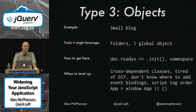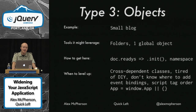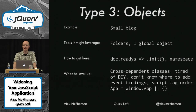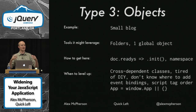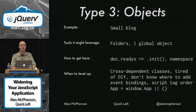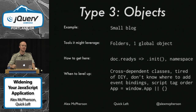How to get here: you turn all of your document readies into an init — one function that kicks off your whole app. You'll have some kind of a namespace containing your entire application, which makes it a lot easier to use third-party code, so you're less likely to have variable name conflicts. When to level up: when you have cross-dependent classes, files that talk about each other, when you're getting tired of DIY, if you don't know where to add your event bindings, or if you ever have a script tag inclusion order problem.